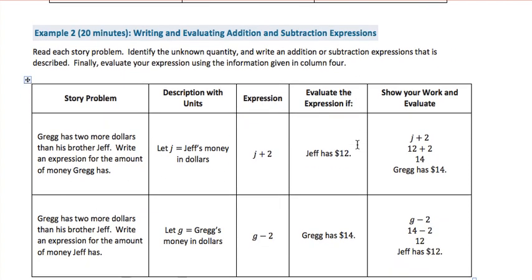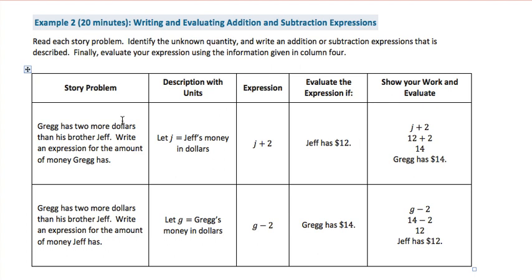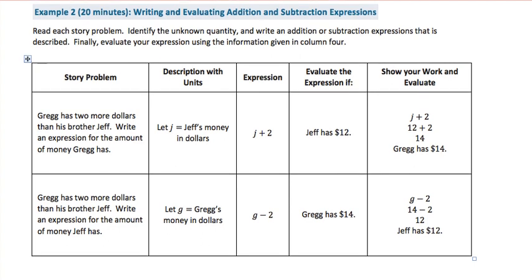As we continue on with example two, you're going to read each story problem and identify the unknown quantity, write an addition or subtraction expression that is described, and then finally evaluate your expression using the information given in column four. Our first two are done for us.